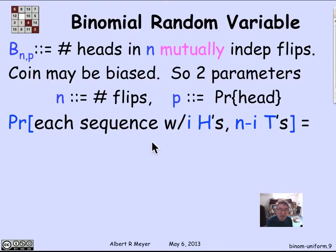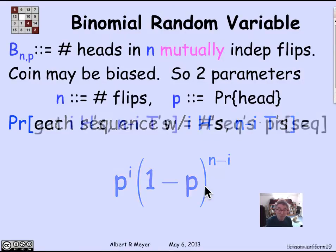Or abstracting, the probability of a sequence of n tosses in which there are i heads and the rest are tails, n minus i tails, is simply the probability of a head raised to the i-th power times the probability of a tail, namely 1 minus p, raised to the n minus i-th power. Given any particular sequence of h's and t's of length n, this is the probability that's assigned to that sequence. So all sequences with the same number of h's have the same probability. But of course, with different numbers of h's, they have different probabilities.